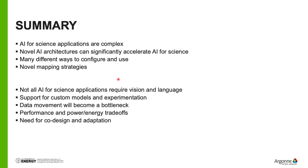In summary, AI for science applications are complex — they are not just end-to-end models; they have different requirements and different components. Novel AI architectures such as SambaNova can significantly accelerate AI for science by reducing context switching and data movement. There are many different ways to configure and use SambaNova and other AI architectures, and we are exploring how to optimally use these architectures and map our deep learning workloads onto them.